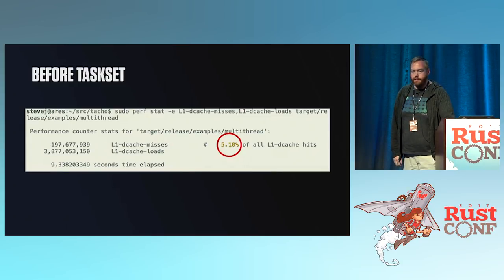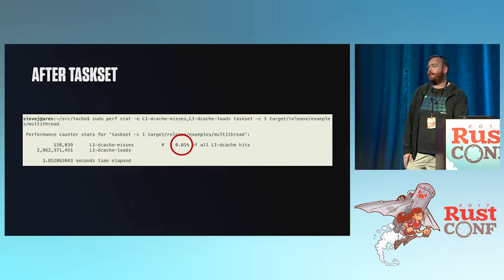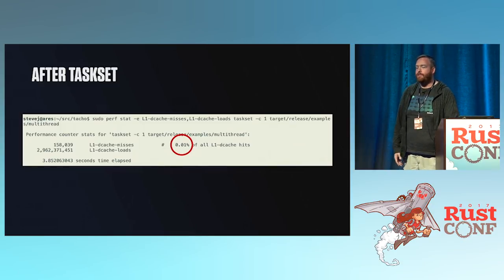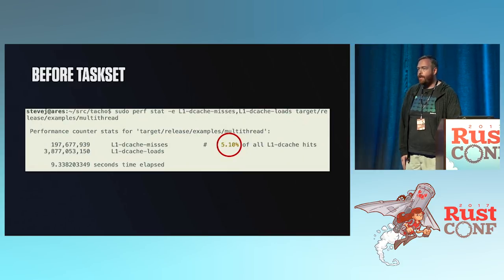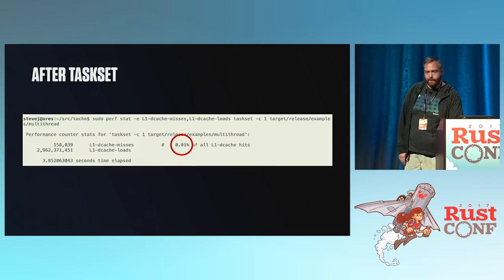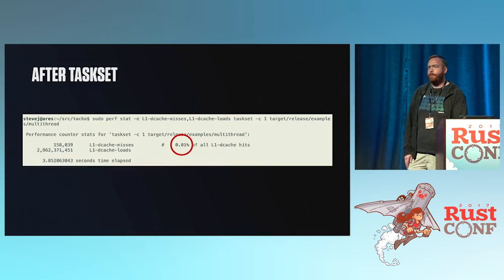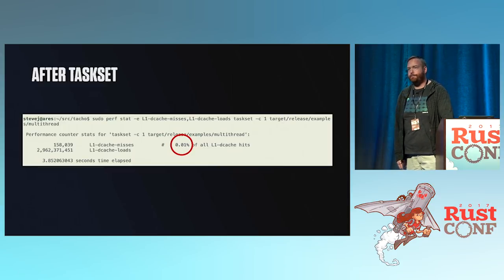Going back to Perf, I had that 5% miss rate for the multi-threaded benchmark. What I decided to do was use task set to run it on one CPU. The miss rate dropped to 0.01%, which was fantastic. The total runtime dropped from 9 seconds to 3.8 seconds — I was really pleased. IPC increased about 10%, which tells me there's still a lot more work we could do to improve it.